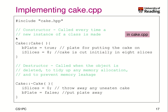Here we have our constructor. Remember, the constructor is called every time a new instance of a class is made. In our case, we declared a constructor that doesn't take any argument. What we wanted to do is set b_plate to true and the number of slices to be 8. In the destructor, what we want to do is remove the plate and set the number of slices to 0.